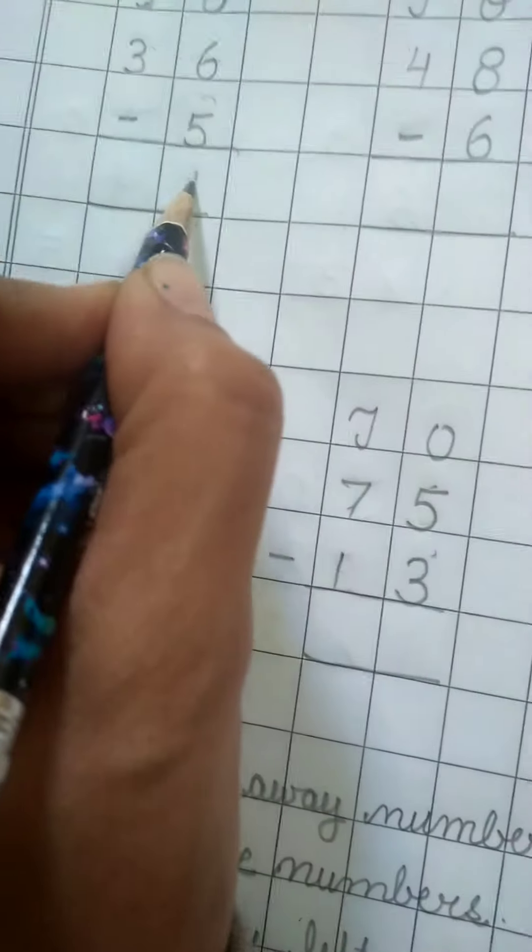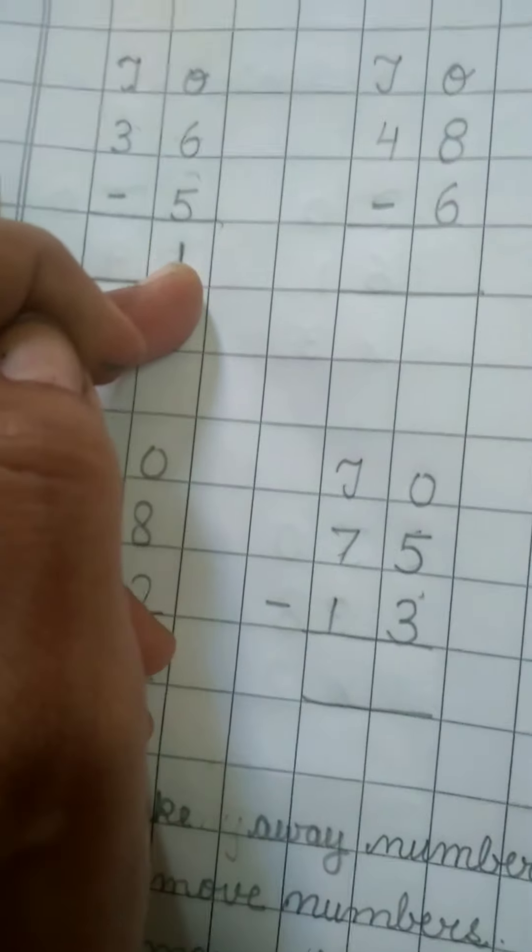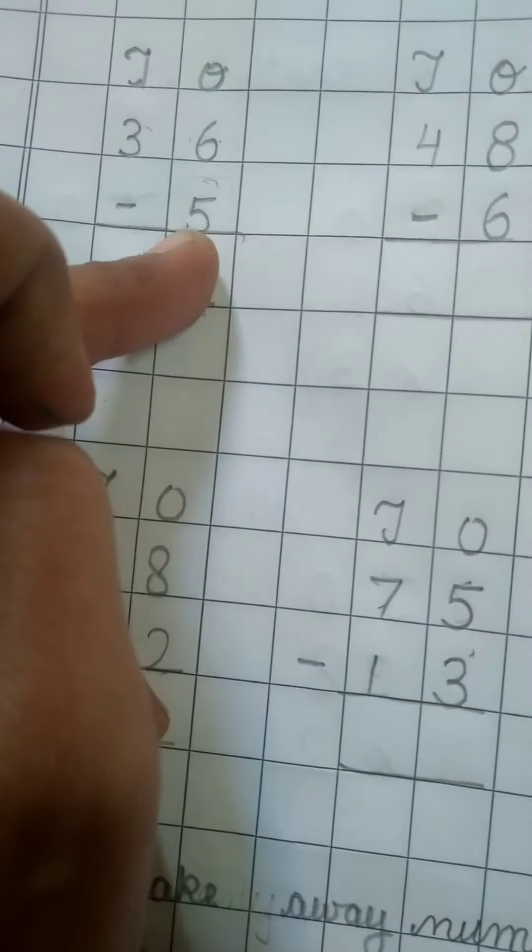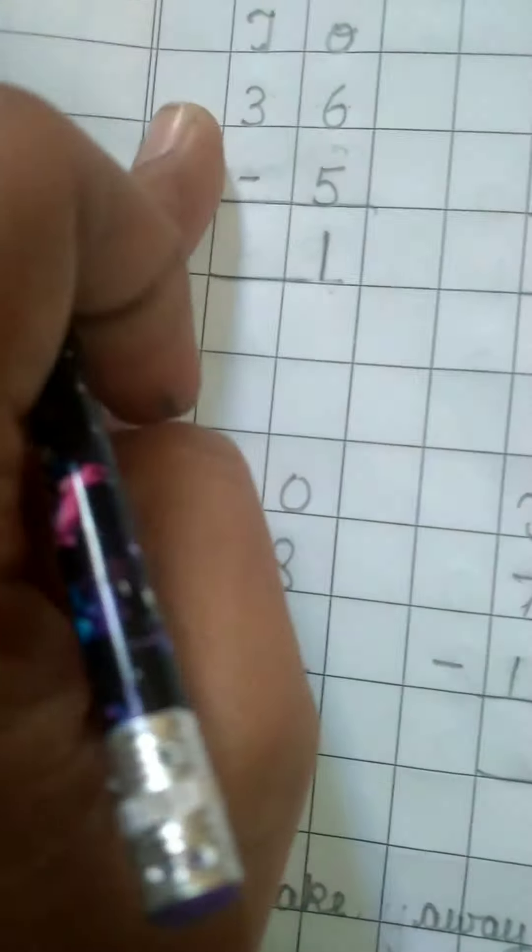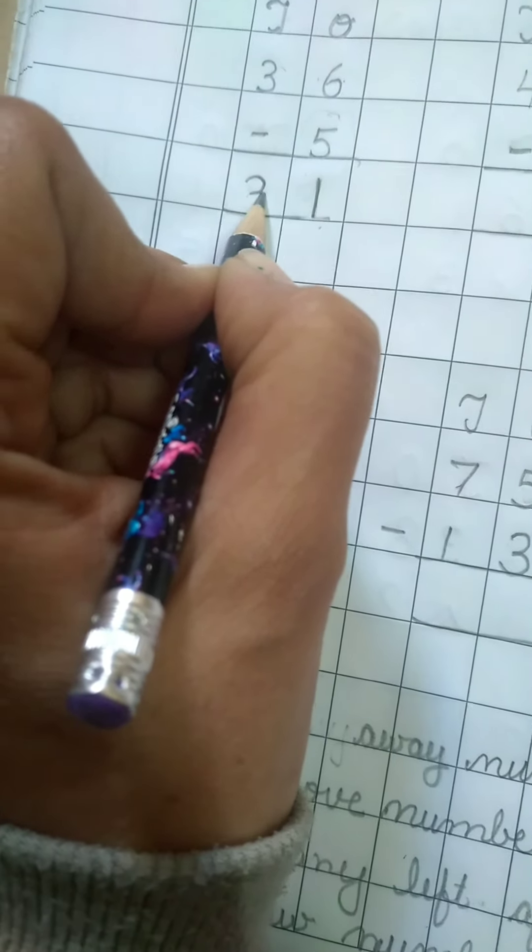We always start doing subtraction or addition with the ones digit. Now the second number is three. There's nothing below the three. What we are going to write? Three as it is.